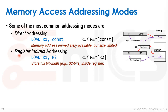A common approach is register indirect addressing. Here, an operand register holds the address to be accessed. For example, R1 points to where we want to store data, while R2 holds the memory address we want to access. We first go to R2 to get the address, fetch the data from that memory location, and store it into the destination register. There is a saying that everything in computer architecture can be solved with indirection.